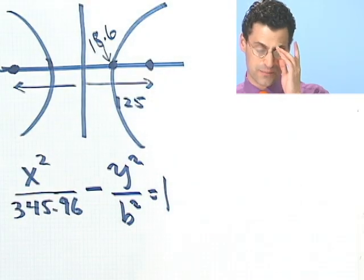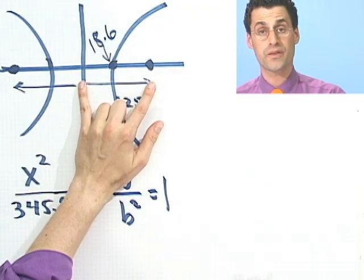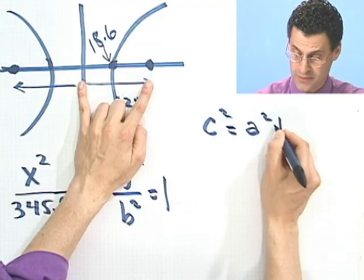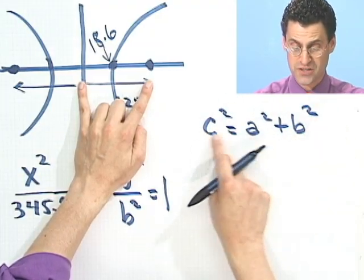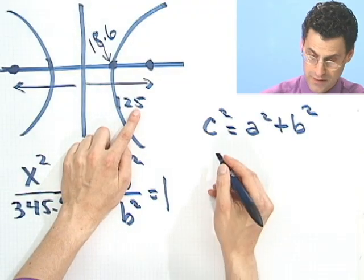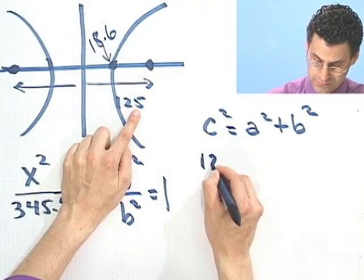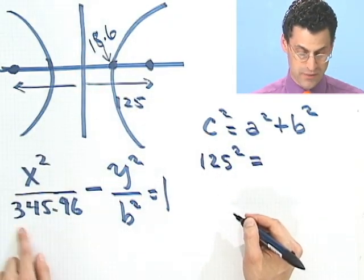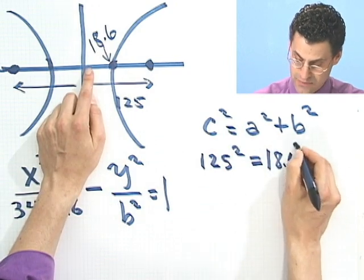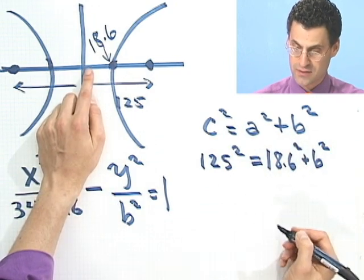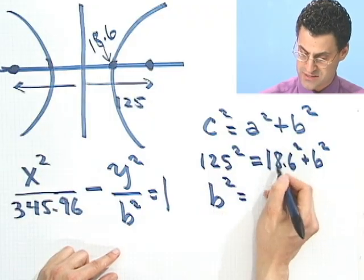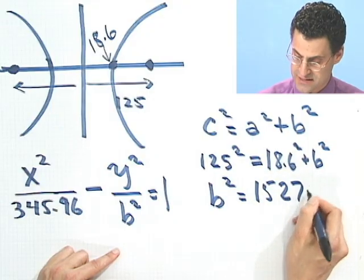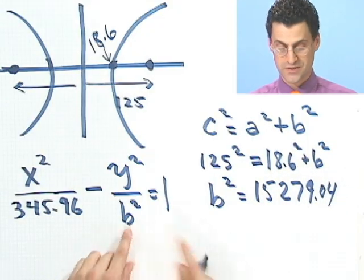But I do know where the focus is. The formula for focus is c² = a² + b². I know c² is 125². So 125² = 18.6² + b². That means b² = 15,279.04.